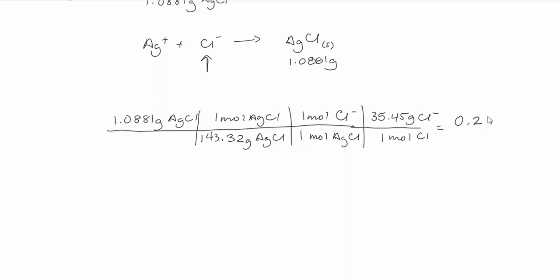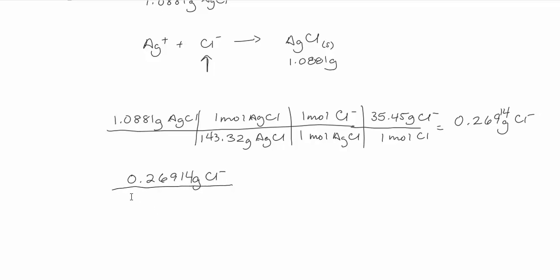I get 0.26914 grams of chloride that reacted — I'll leave those digits in the calculator. Now I use that as a ratio with my original sample mass of 1.1324 grams, then multiply by 100 to get the percentage. The result is 23.76% of my sample by mass was chloride anion.